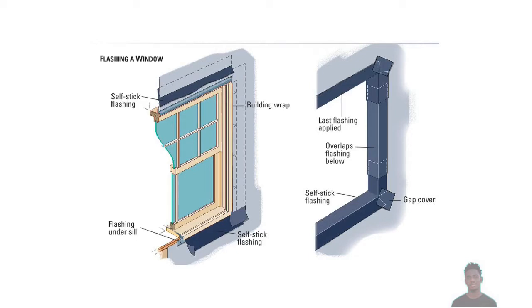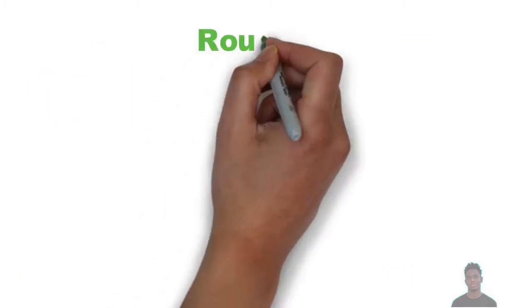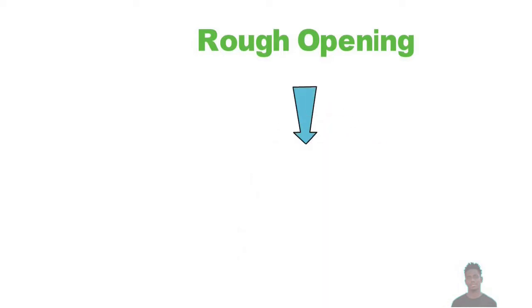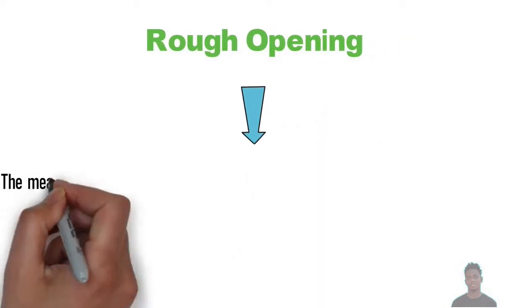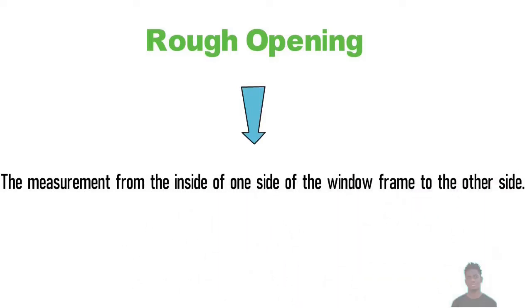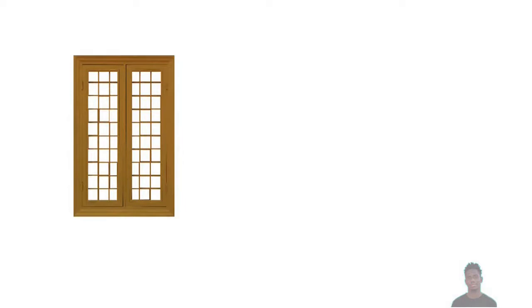When measuring the window to determine the standard size, you need to find out the rough opening. The rough opening is the measurement from the inside of one side of the window frame to the other side. This is how manufacturers determine the standard sizes for your window.